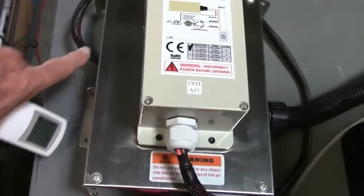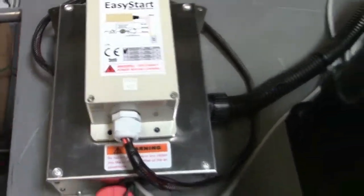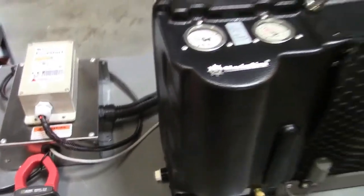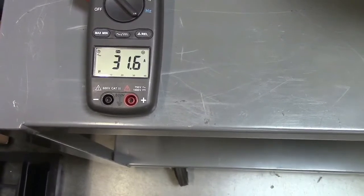It installs very simply. The wires you can wire straight into the unit. You know, this compressor's so quiet I didn't even hear it start, but it has 31.6 amps.